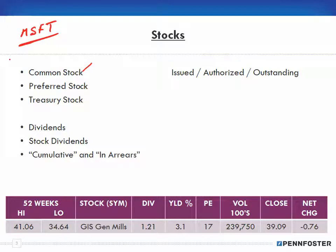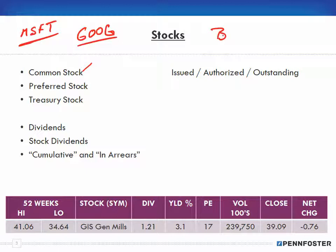A ticker symbol is sort of an abbreviation. Google is G-O-O-G, and you recognize that Microsoft is MSFT. They can be either three or four letters long. Sometimes you might see something like Berkshire Hathaway — Warren Buffett's stock — which I believe is BRSK, and then there's a dot followed by maybe an A, giving you five letters as part of the ticker symbol.